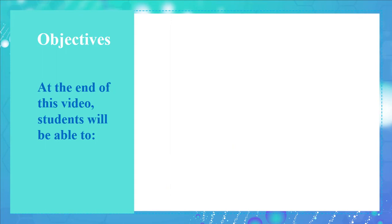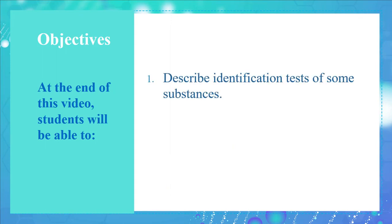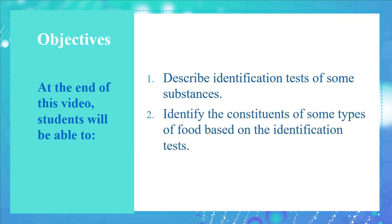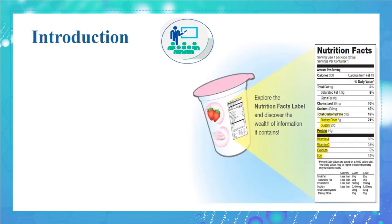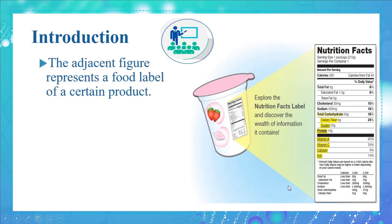At the end of this video, you will be able to describe identification tests of some substances and identify the constituents of some types of food based on the identification tests. So let's get started. The adjacent figure represents a food label of a certain product.